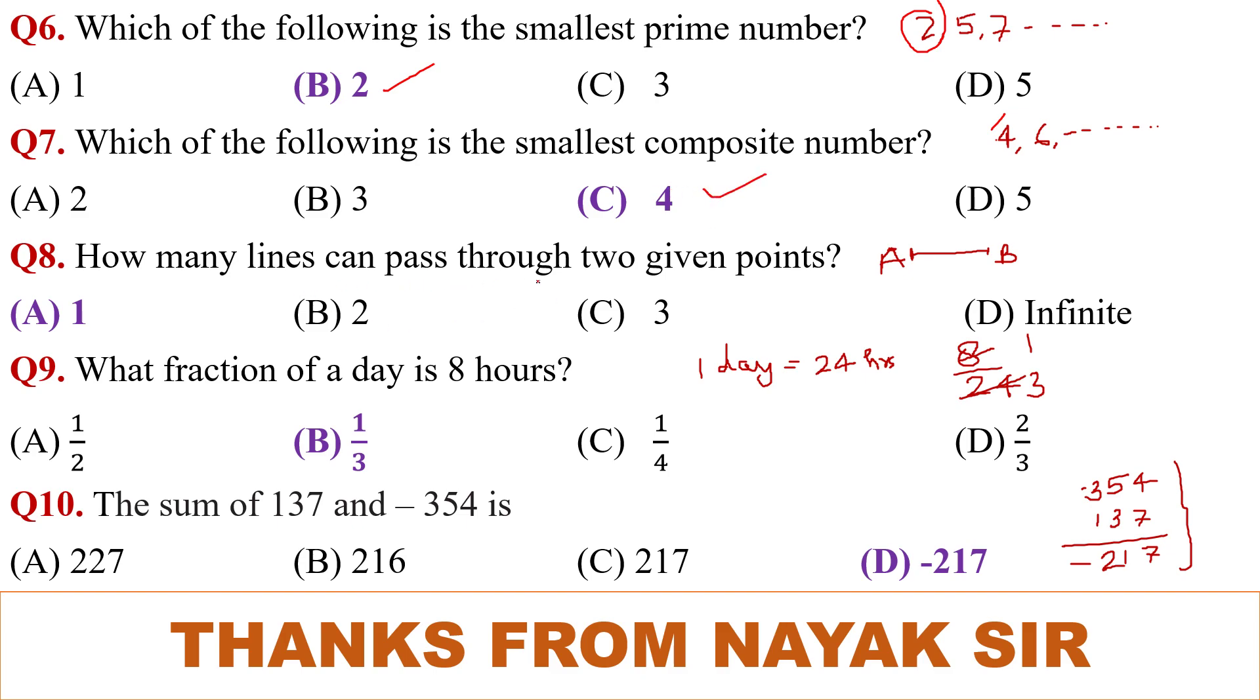How many lines can pass through two given points? Suppose there are two points A and B. When you join these two points, you will get only one line. Option A is the correct answer.